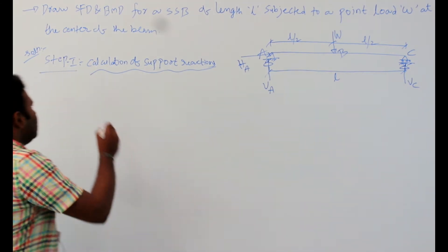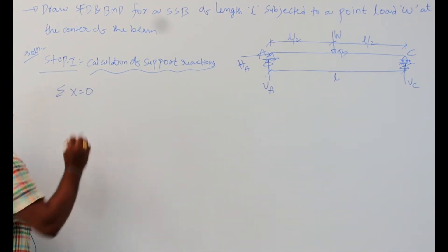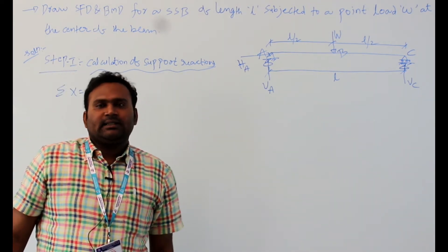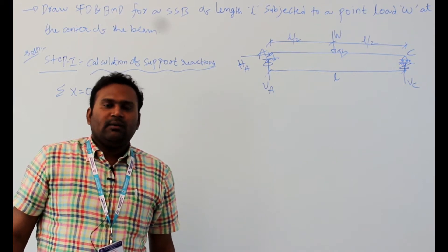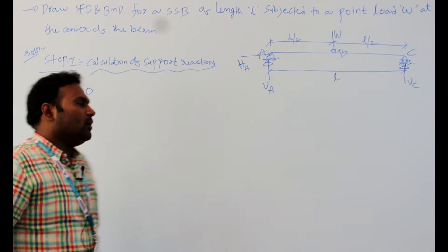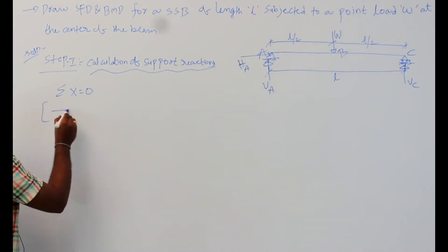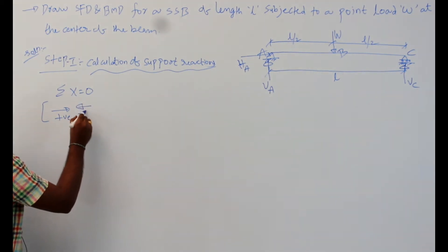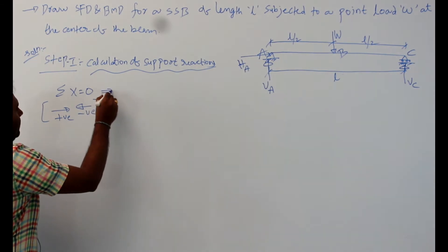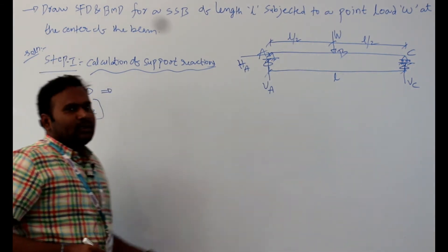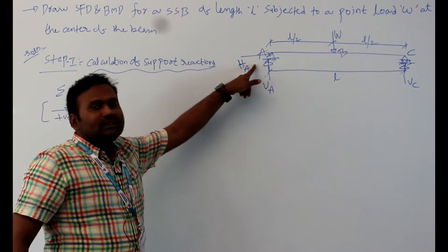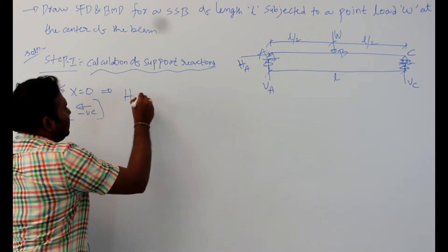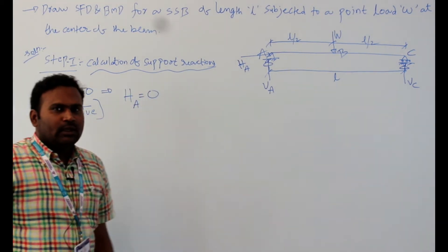First, apply Sigma X = 0, meaning the sum of all forces in the x-direction equals zero. All rightward forces are positive and leftward forces are negative. HA is the only horizontal force acting on this beam. Therefore, HA = 0.